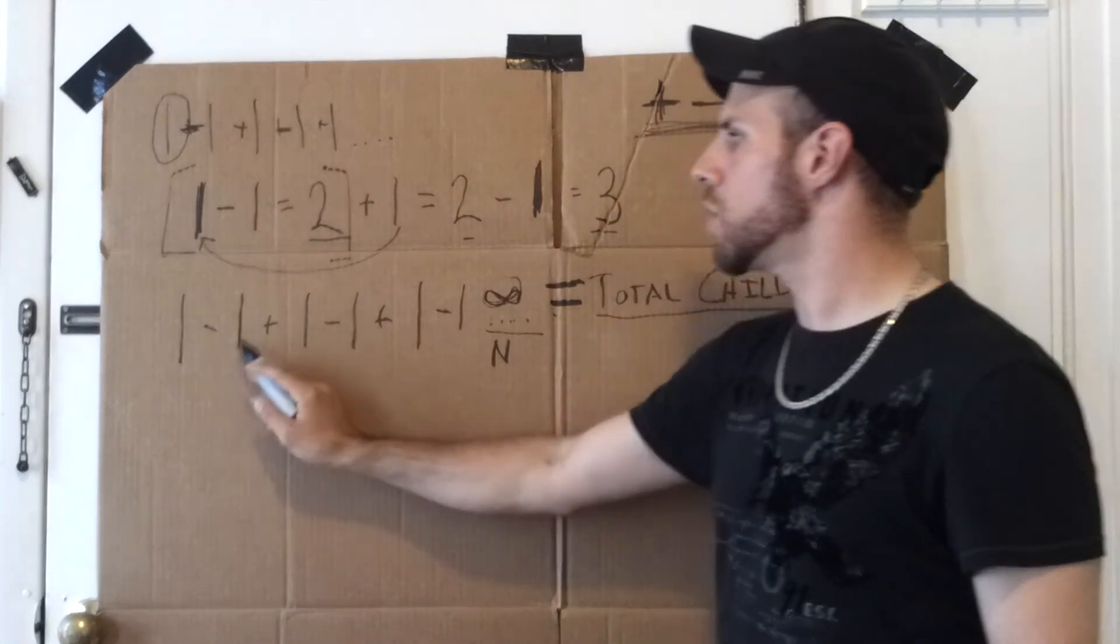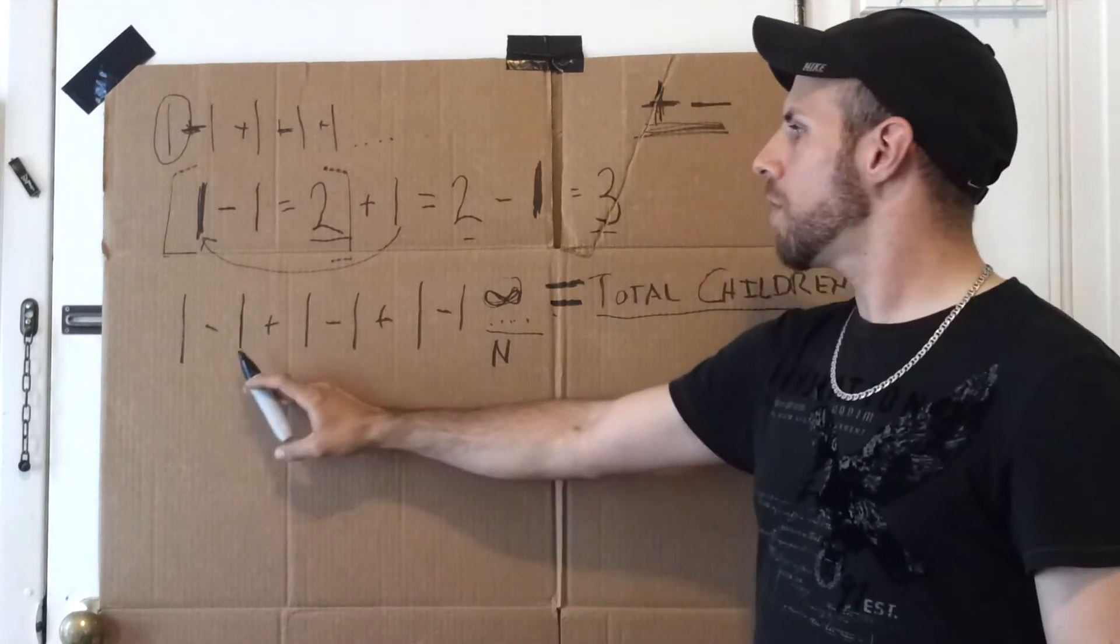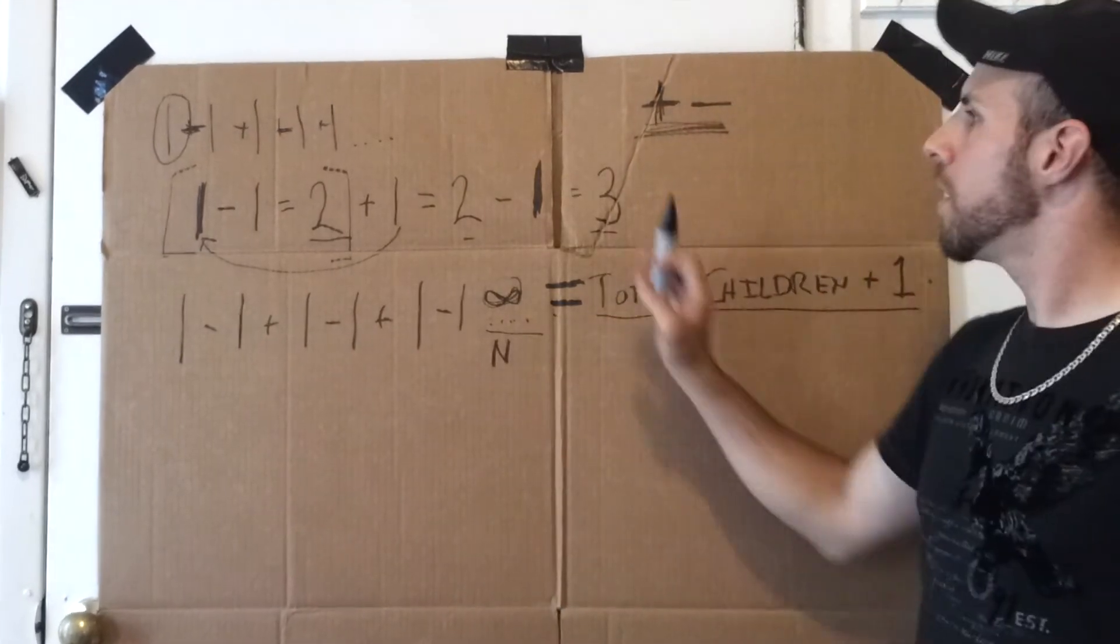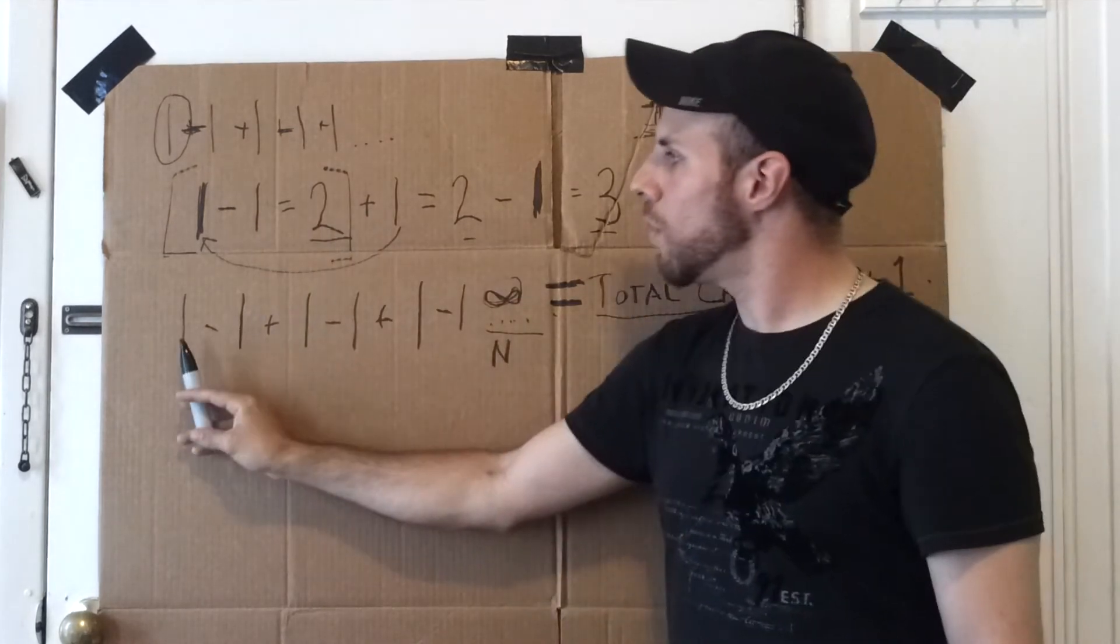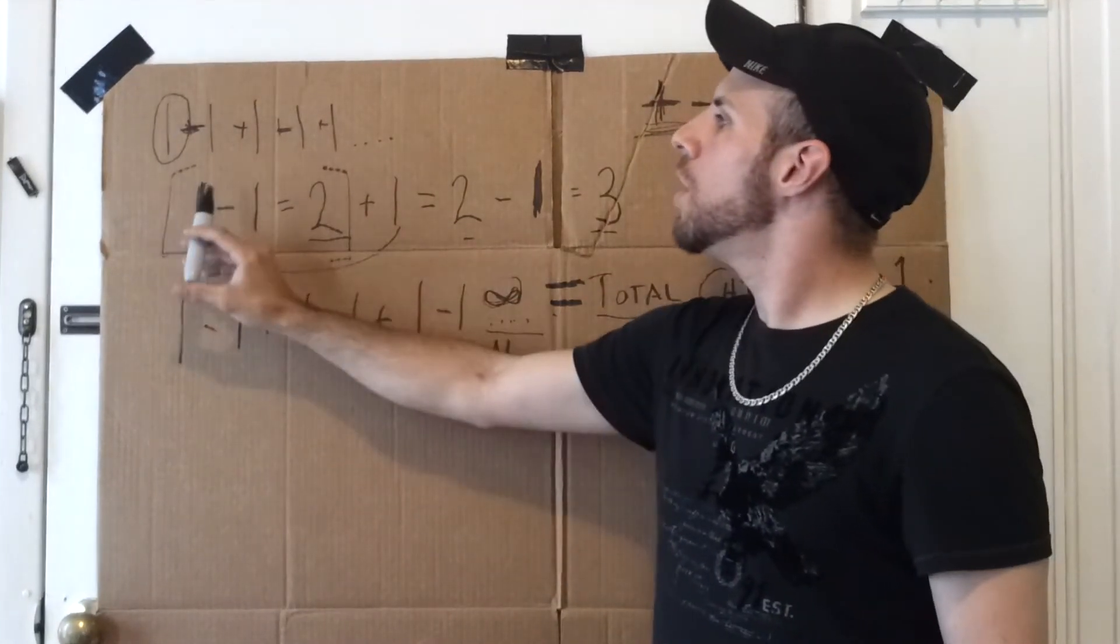So with his series, 1 minus 1 plus 1 minus 1 plus 1, when you break it down, you wind up with the answer being the total number. Or I should take a step back, when you break down his series, 1 minus 1 plus 1 minus 1 plus 1, you have 1.